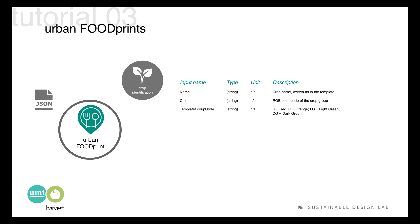Three data entries identify each crop: its name, its color, and the code of its template group. If you rename a crop, don't forget to rename it in the library template too, and use the exact same name including lower and upper cases. Color is the RGB color code of the crop group — you don't have to change it. The template group code is R for red crops, O for orange, LG for light green, and DG for dark green crops.